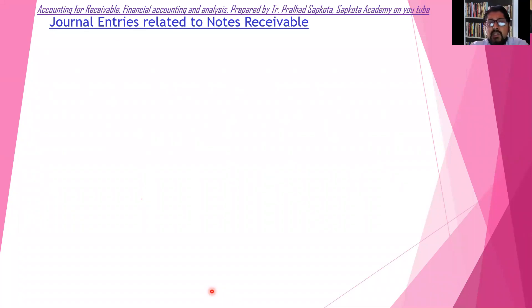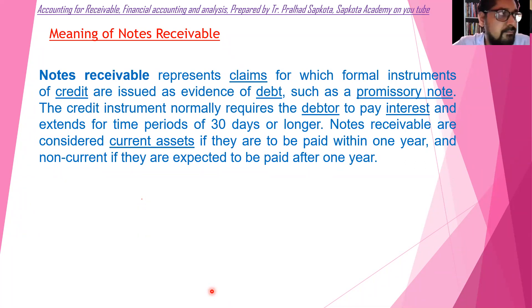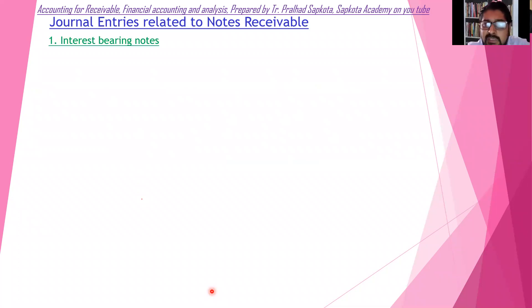How do we make the journal entry? This is the second type. The journal entry is related to notes receivable.